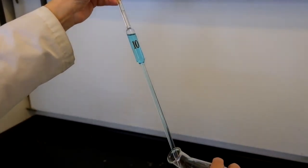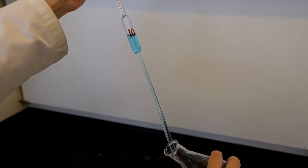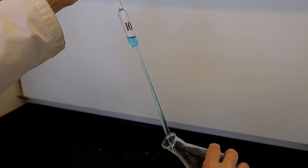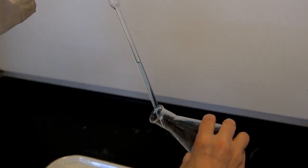Bring the pipette to the Erlenmeyer flask and release the pressure on the index finger. Drain the solution into the Erlenmeyer flask with the pipette tip touching the wall of the flask. After draining, wait 10 seconds before removing the pipette.